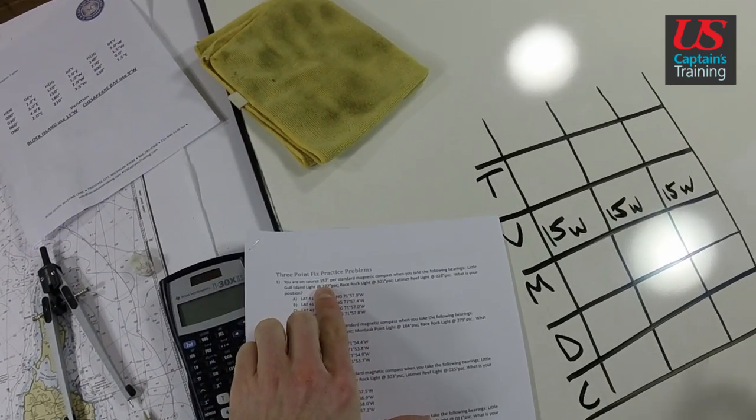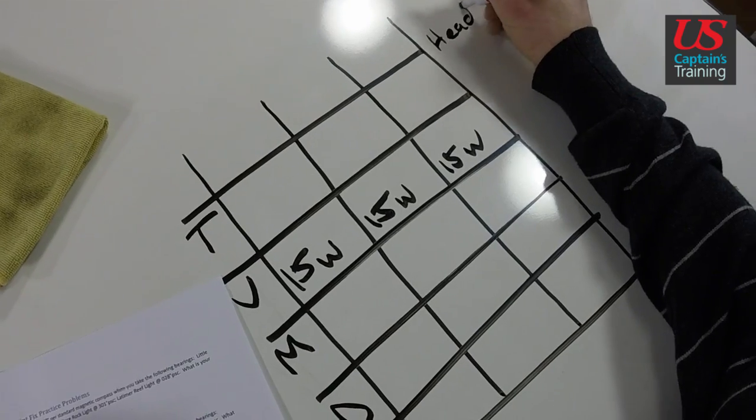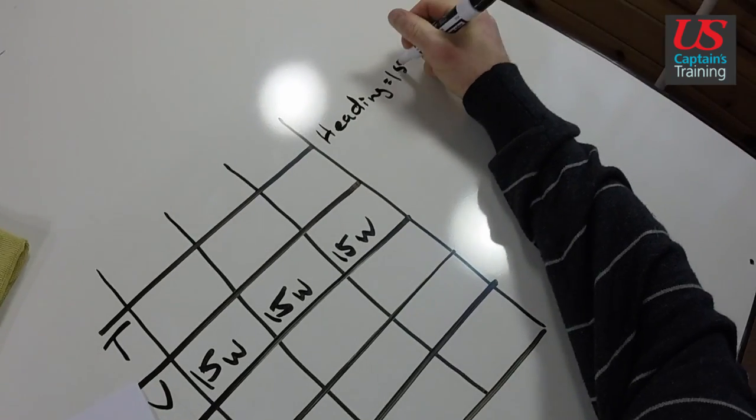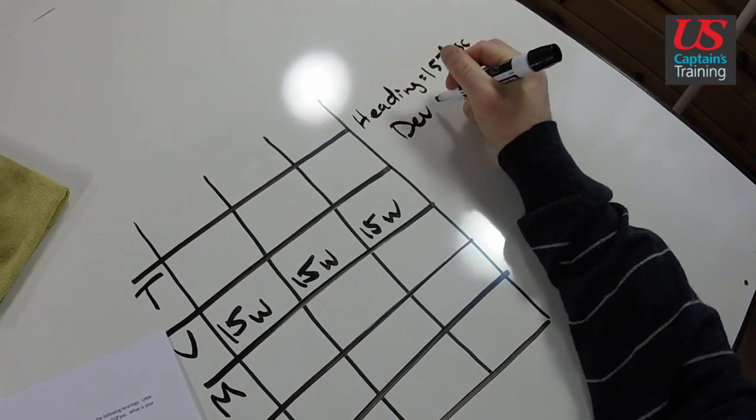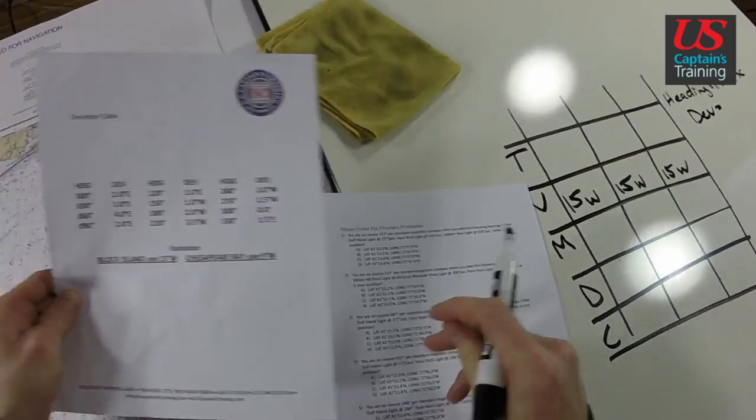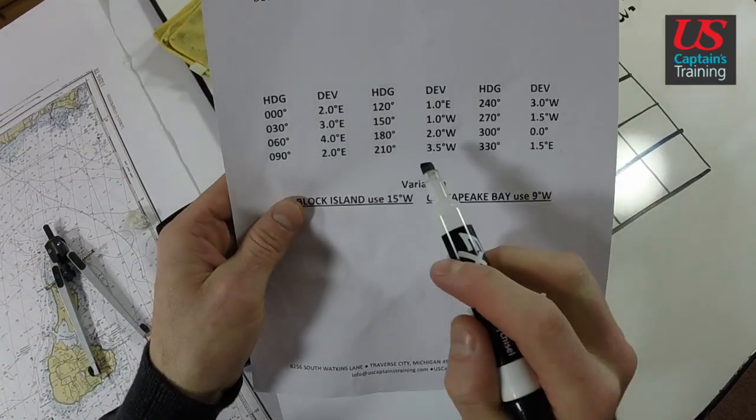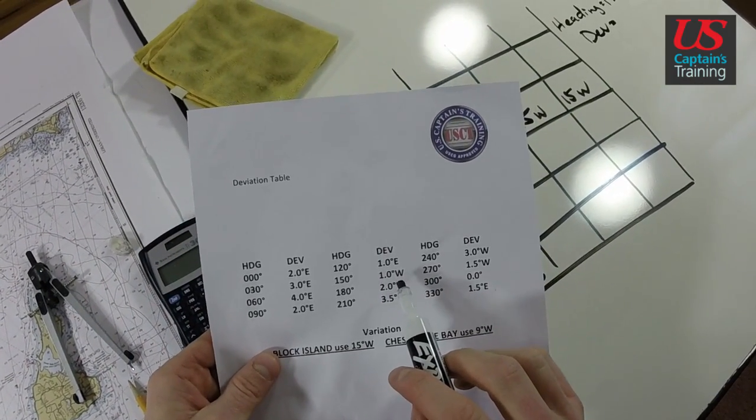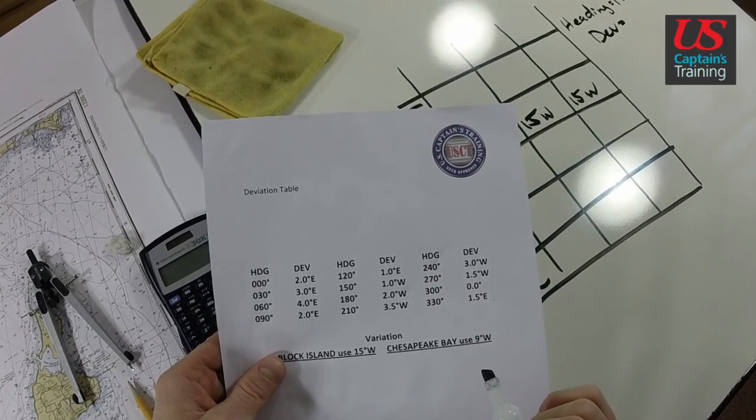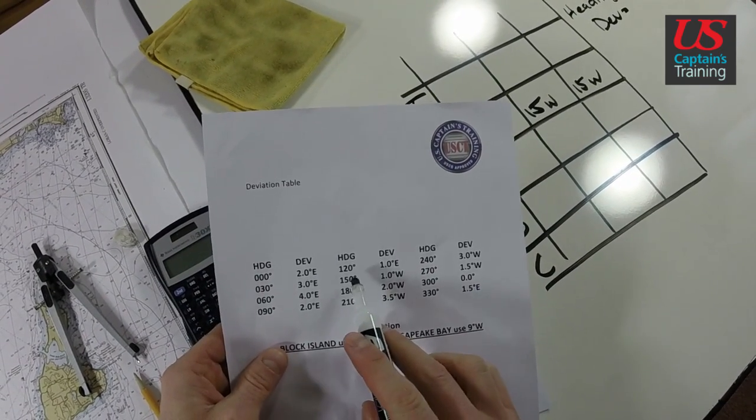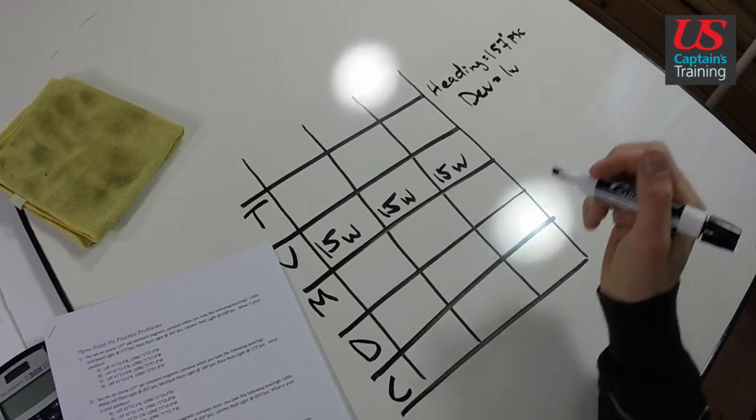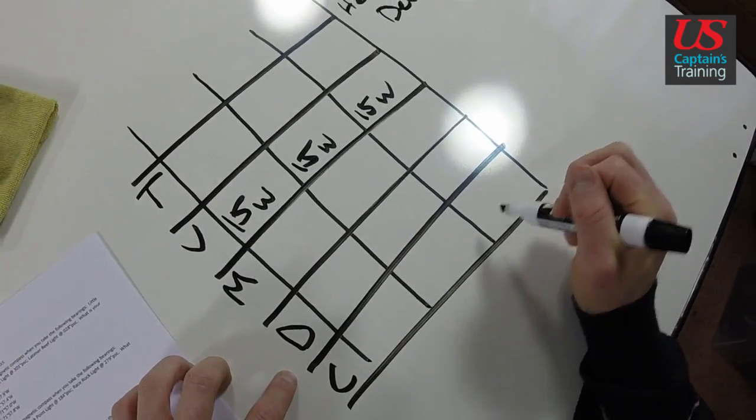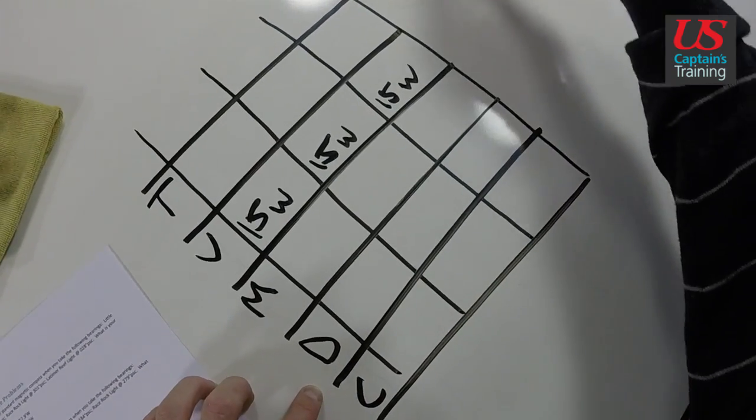Deviation is based on heading. What is our heading? You are on course 157 degrees PSC, which gives us a deviation of—we'll go to our table. It's 157, here we are, 150 one west is what we're using. 165 is right in the middle, 157 is below that. We're going to use one west, one west.